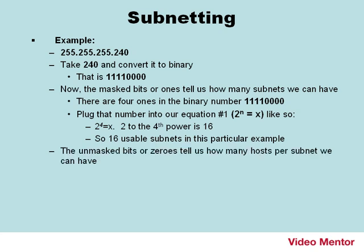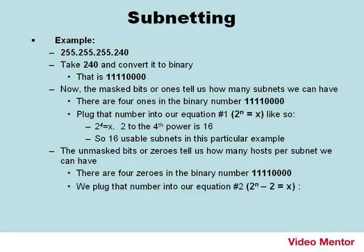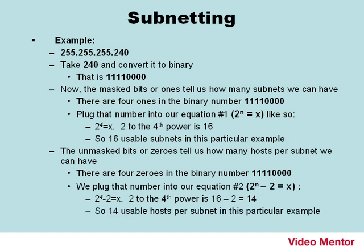The unmasked bits, or zeros, tell us how many hosts per subnet we can have. There are four zeros in 11110000, so we plug that into equation two: two to the fourth power minus two equals 14. So we can have 14 usable hosts per subnet. That's because we can't use the first or the last — the first is dedicated to the subnet ID, much like a network ID, and the last is for the subnet broadcast address.